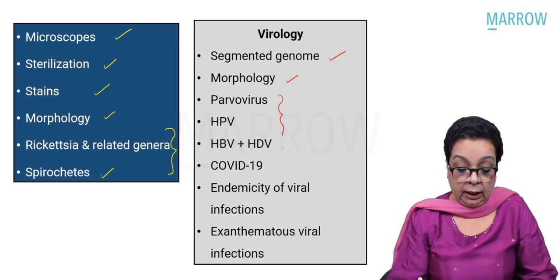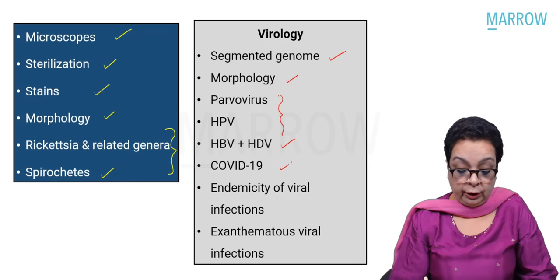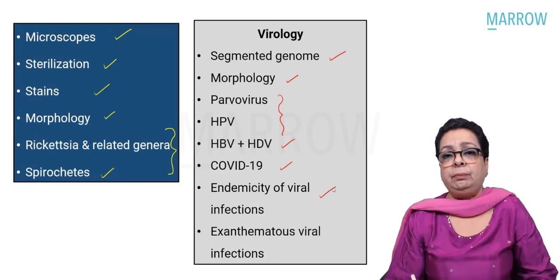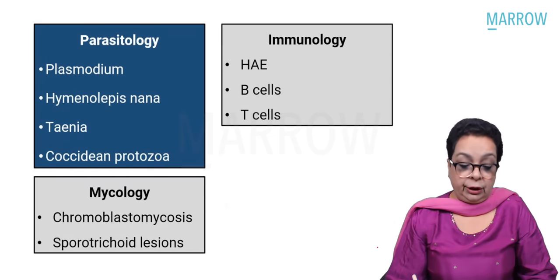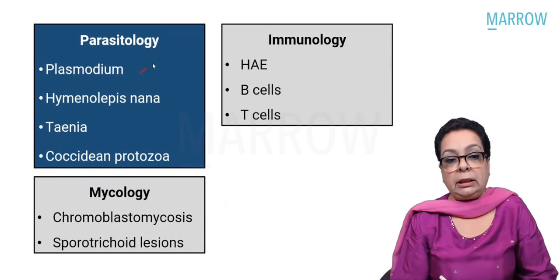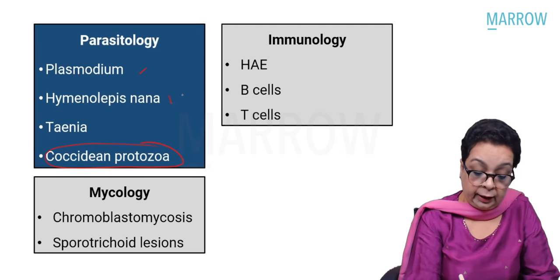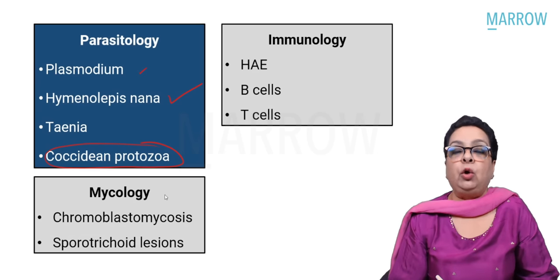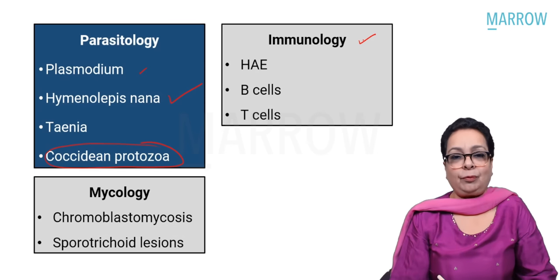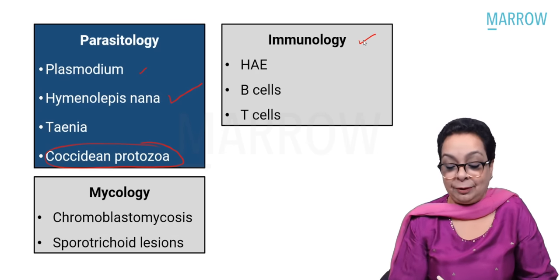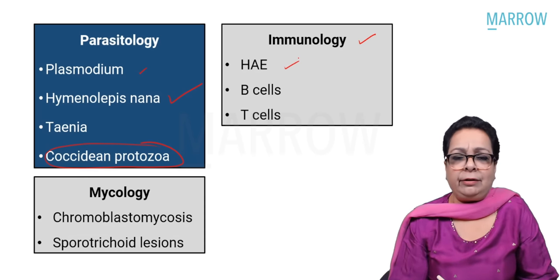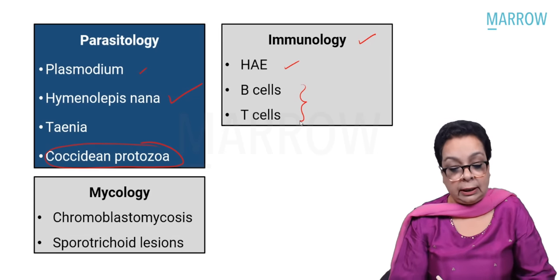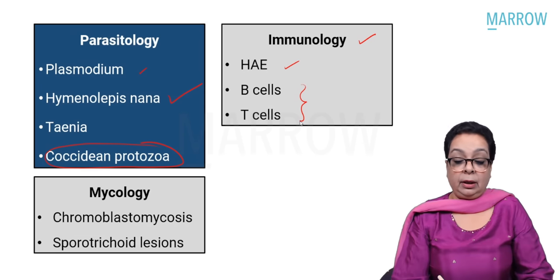In virology we had questions on segmented genome, morphology of viruses, parvovirus, human papilloma viruses, hepatitis B and hepatitis D co-infection and super-infection, COVID-19, endemicity of viral infections, and viral infections associated with vesicular rash and petechial rash. In parasitology, we had a question each from plasmodium, hymenolepis nana, tinea, and coccidian protozoa. From mycology, chromoblastomycosis and sporotrichosis. From immunology, hereditary angioneurotic edema, B cells and T cells. Let's get going with the questions.